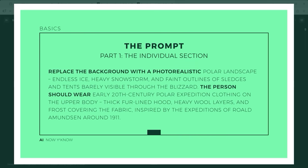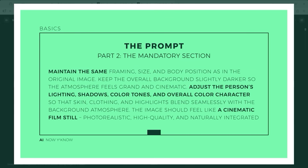The first part of the prompt might say: replace the background with a photorealistic desert scene; the person should wear a spacesuit. That defines the scenario — astronaut, sailor, or anything else you imagine. Then comes the mandatory part, and it always stays the same, right at the end of your prompt: maintain the same framing, size and body position as in the original image; keep the overall background slightly darker so the atmosphere feels grand and cinematic. You'll find the full prompt in the video description — no need to write it down.